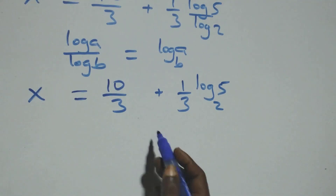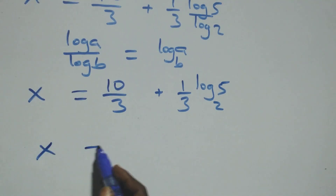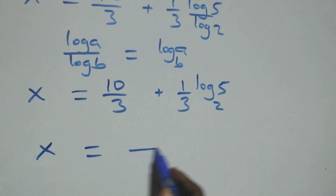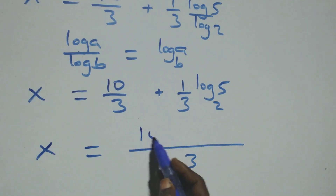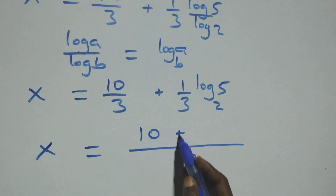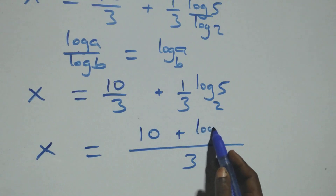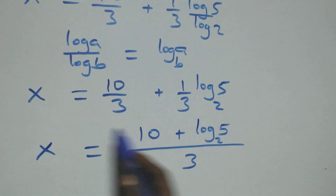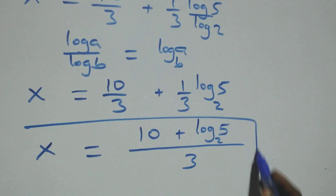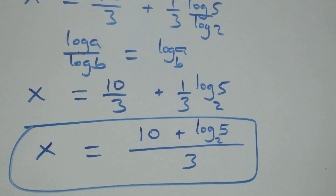Bringing this together as one fraction, x equals 10 plus log 5 base 2, all over 3. So the value of x is (10 + log₂5) / 3.